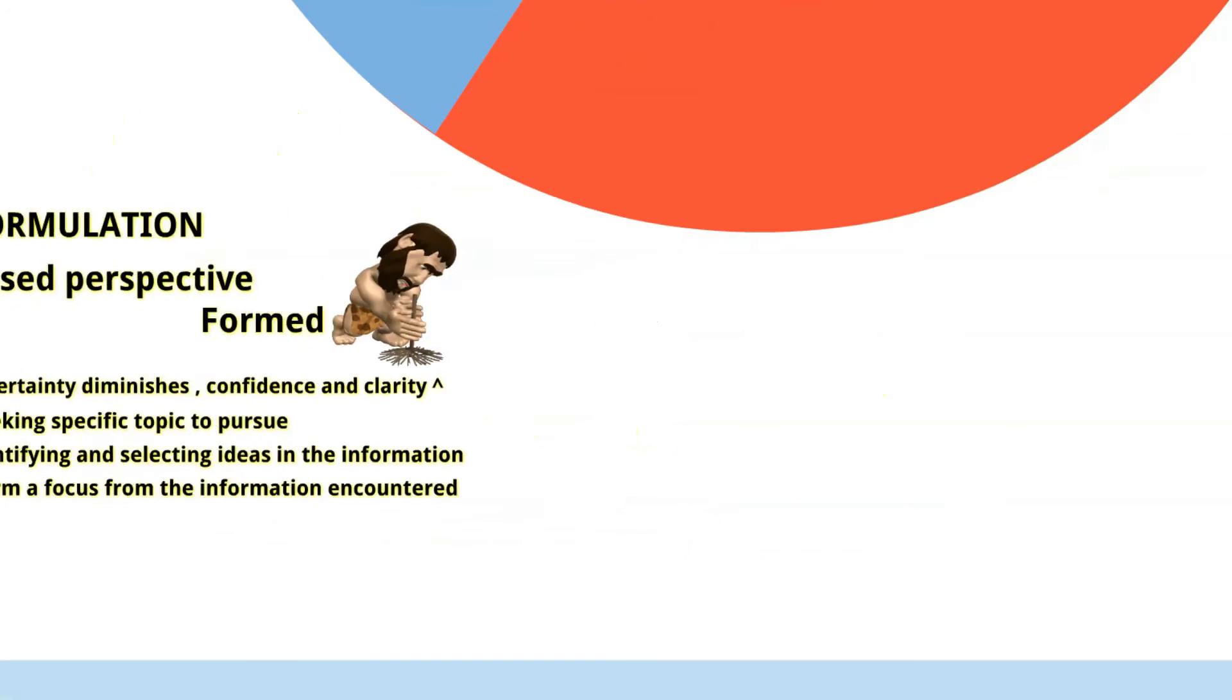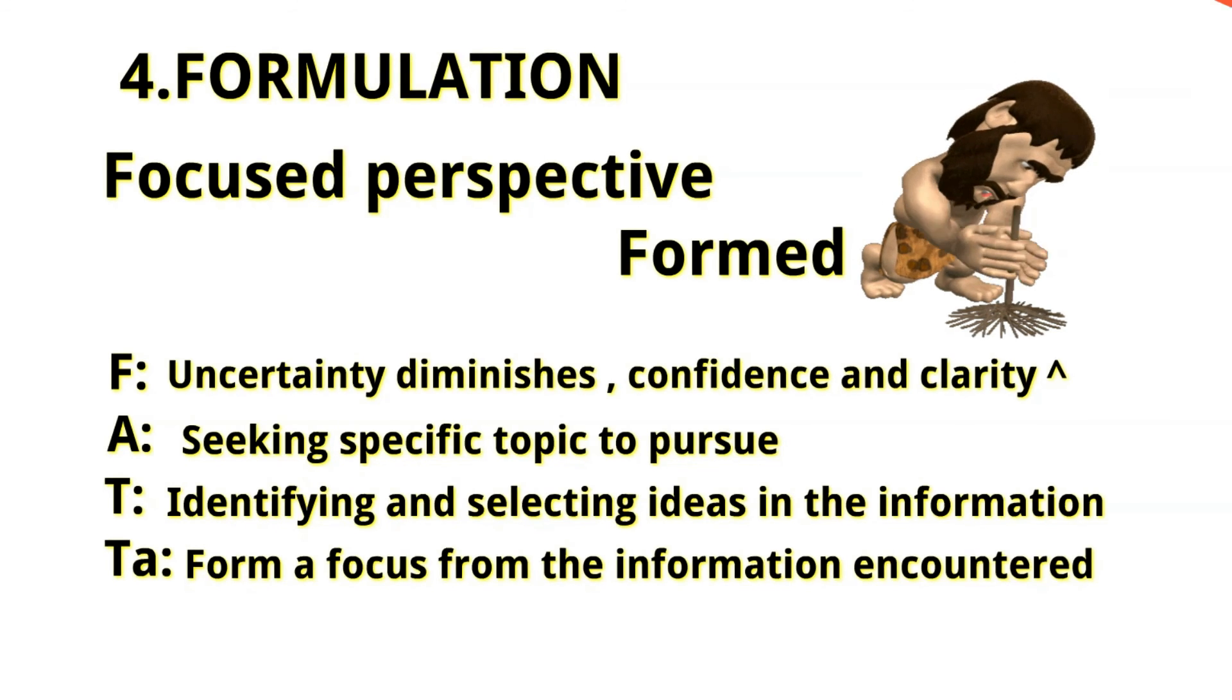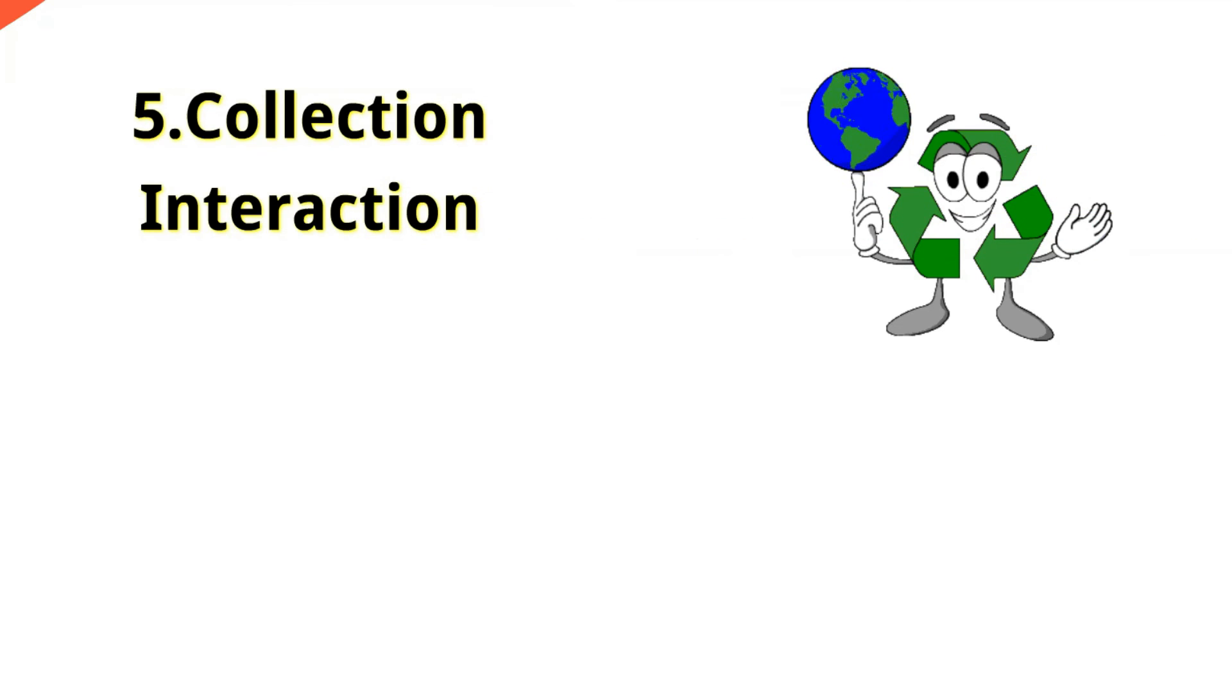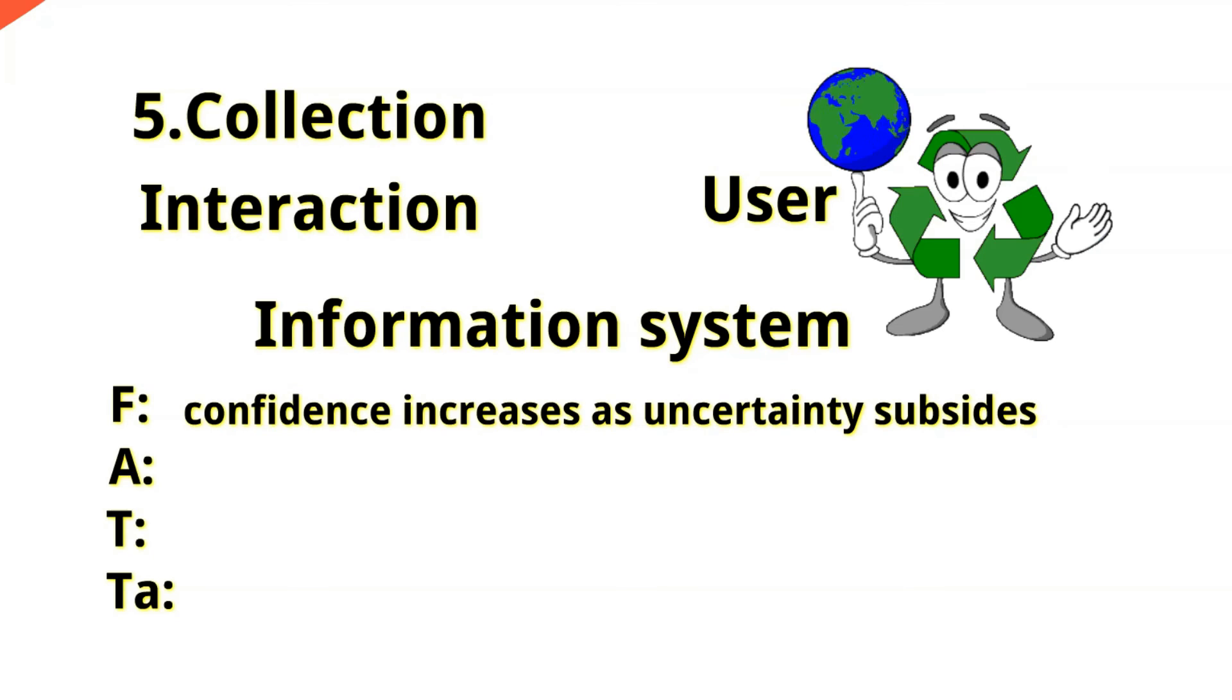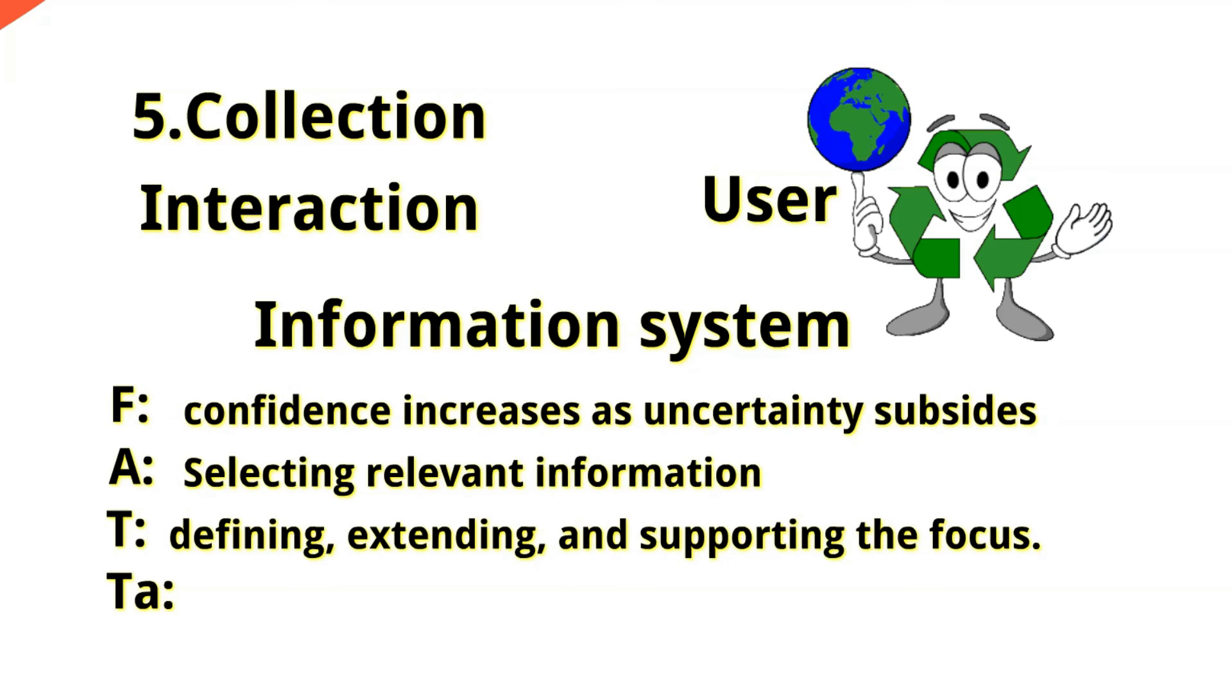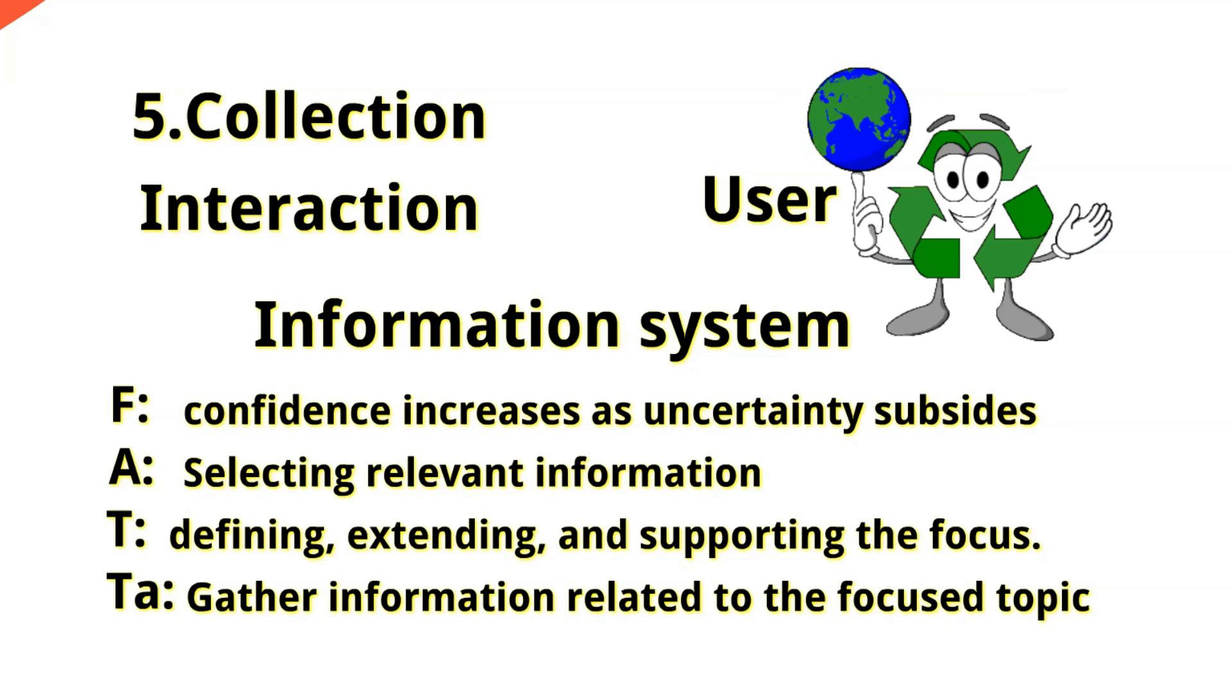Let us now proceed to our second to the last ISP model, which is called Collection. Collection is when interaction between the user and the information system functions most effectively and efficiently. So let us have the FAT. For your feelings, it involves that confidence continues to increase as uncertainty subsides. And for your actions would be selecting information relevant to the focus perspective of the topic, or selecting the most relevant information. And for your thoughts, it centers on defining, extending, and supporting the focus topic. For the task in your collection would be to gather information related to the focus topic.